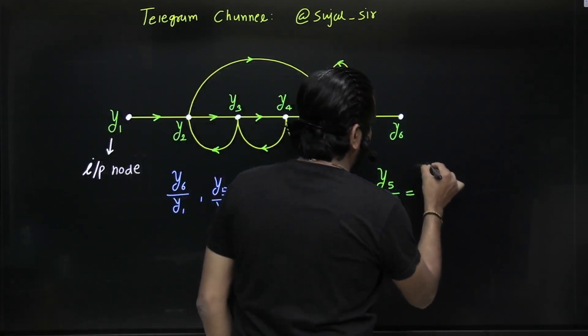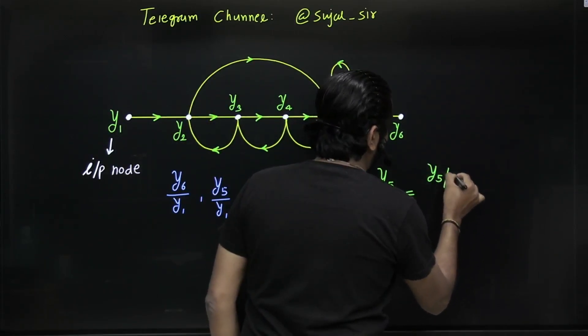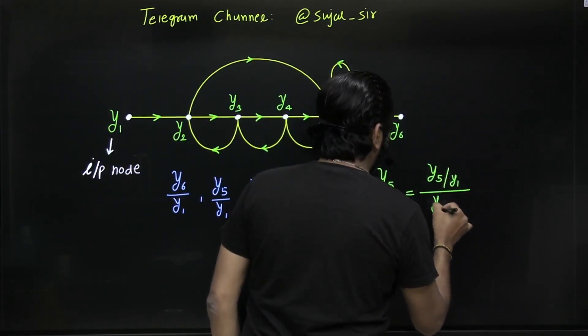First of all, you have to find y5 by y1, then y3 by y1.